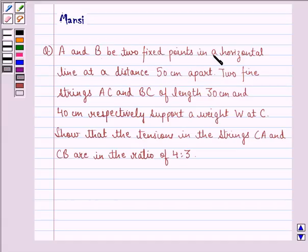The question says: A and B be two fixed points in a horizontal line at a distance 50 cm apart.